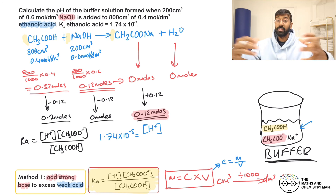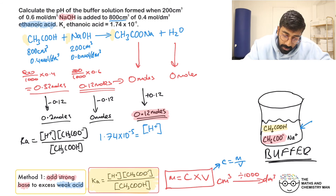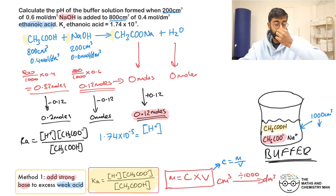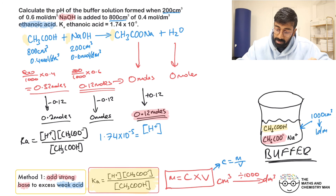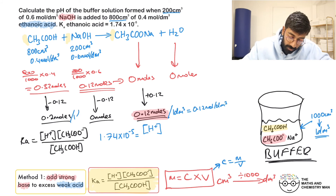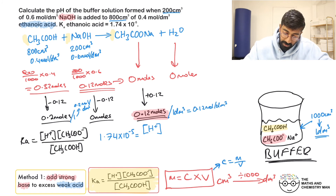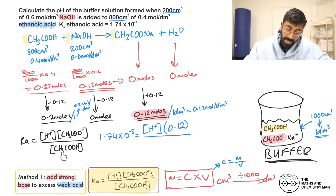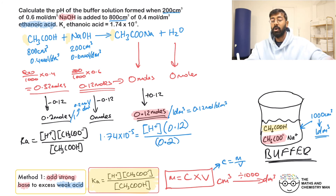The total volume in the beaker is 800 + 200 = 1000 cm³ = 1 dm³. Dividing moles by 1 dm³ means the concentrations equal the mole values: [CH₃COO⁻] = 0.12 mol dm⁻³ and [CH₃COOH] = 0.20 mol dm⁻³. Substituting into the Ka expression: 1.74 × 10⁻⁵ = [H⁺] × 0.12 / 0.20.